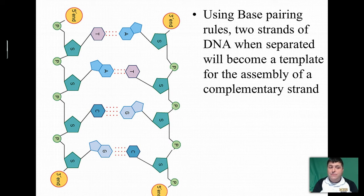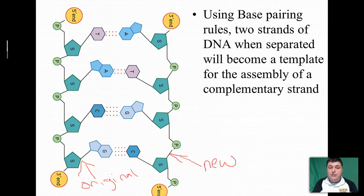And so one strand could be our original strand, acting as a template, and it's going to allow us to produce a new strand. At the end, we'd have a completely new strand of DNA that is double stranded.